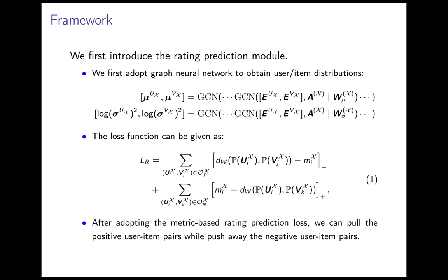We first introduce the rating prediction model. We adopt graph neural networks to obtain user-item distributions. The loss functions are shown as LR.